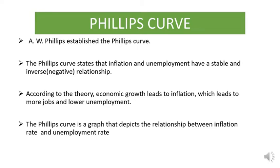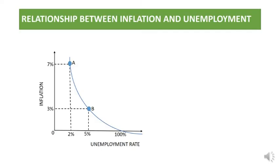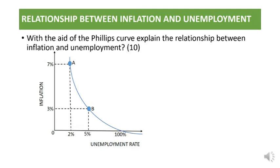It is a graph that depicts the relationship between inflation rate and unemployment rate. Here we have the Phillips Curve. The question we need to answer reads: with the aid of the Phillips Curve, explain the relationship between inflation and unemployment. Ten marks.